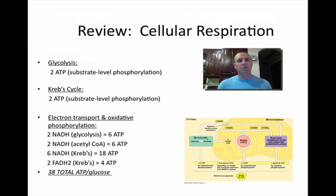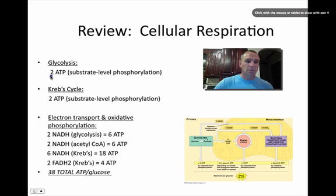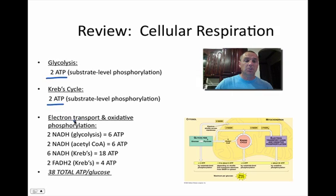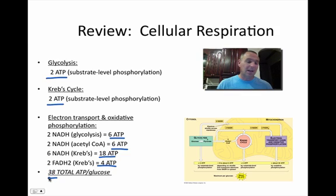Let's review the whole process. In glycolysis, we get two ATP net. In the Krebs cycle, we get two. Then we go through the electron transport chain and oxidative phosphorylation, where we get 34. So adding those totals up, we get a total of 38 ATPs — somewhere thereabouts — when we go through the entire process.